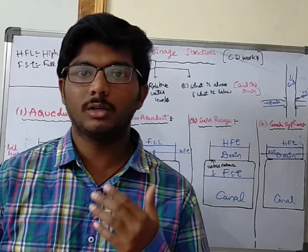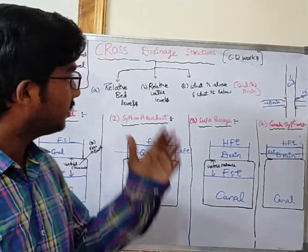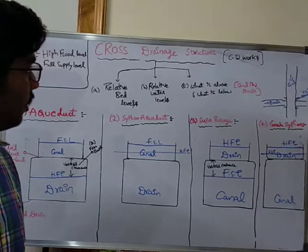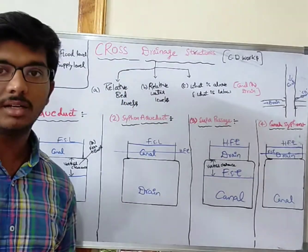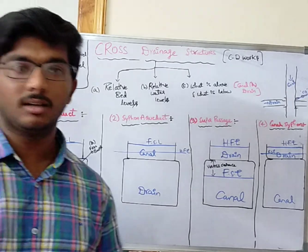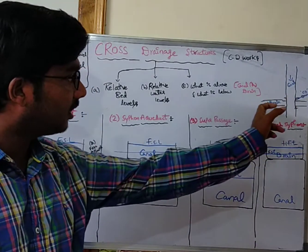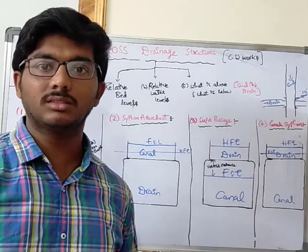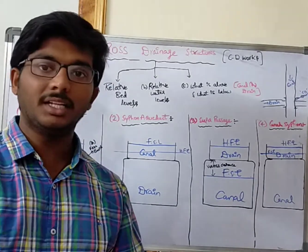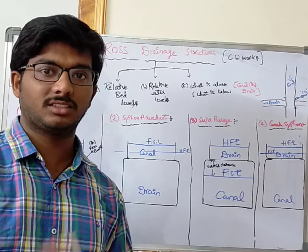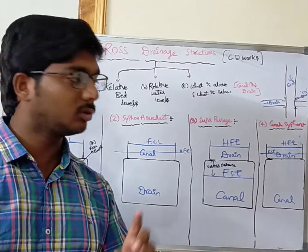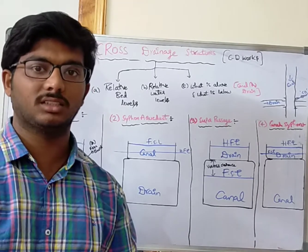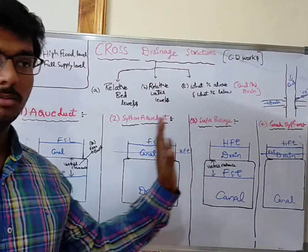Good morning everyone. Today we will get to know about cross-drain structures — what is meant by it and how it is used. A cross-drain structure is a structure constructed when a canal meets a drain, or when a drain meets a canal. When two flow lines meet each other, we need a cross-drain structure so that the canal and drain do not interlink or mix with each other.